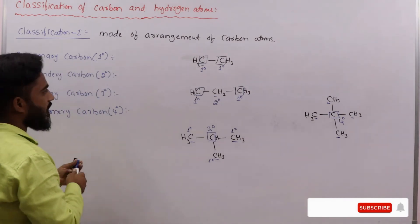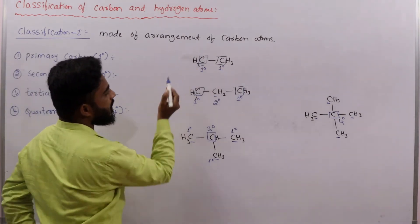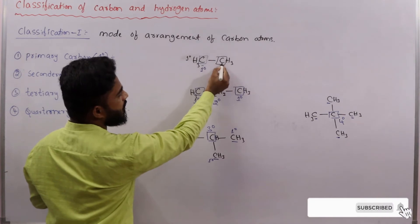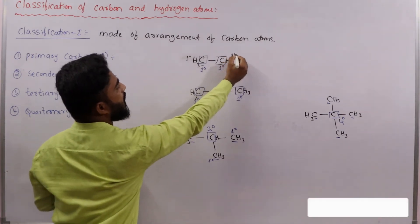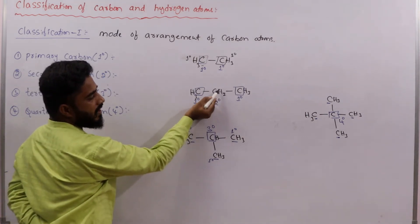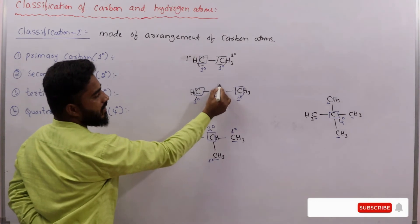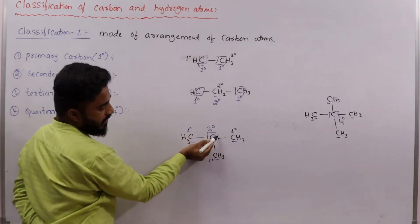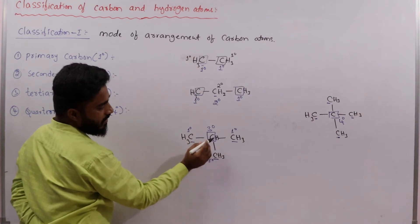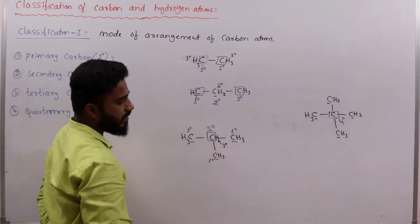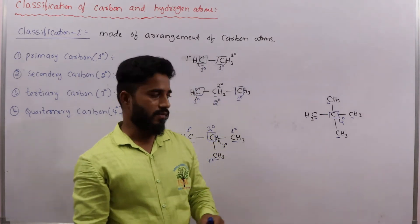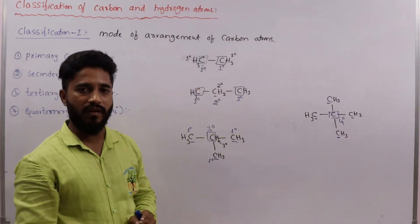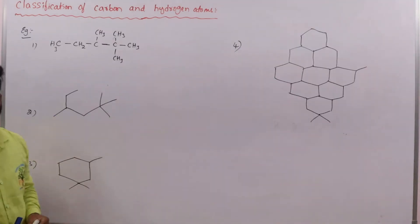So to recap: hydrogens bonded to primary carbon are primary hydrogens; hydrogens bonded to secondary carbon are secondary hydrogens; hydrogens bonded to tertiary carbon are tertiary hydrogens. Quaternary hydrogen is not possible because valency would be exceeded. Remember that. Now let us see some examples.